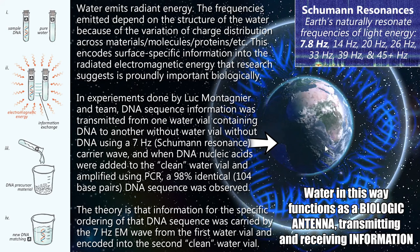These are Schumann resonances — Earth's naturally resonant frequencies of light energy, created by things like lightning and solar radiation hitting the ionosphere. The foundational mode is 7.8 hertz, with additional modes at 14, 20, 26, 33, 39, and 45 hertz. The higher the frequency, the more information can be encoded into that wave. 7.8 hertz varies from about 7.2 to 8.8, and Montagnier's team used a 7 hertz wave. So we are constantly bathed in this 7 to 9 hertz energy naturally due to Schumann resonances.